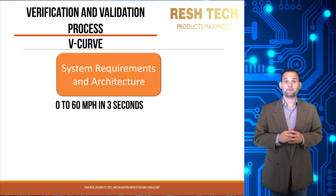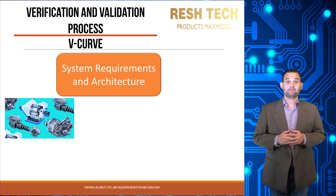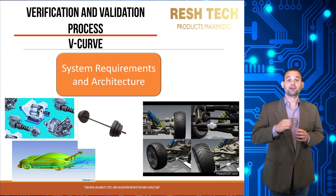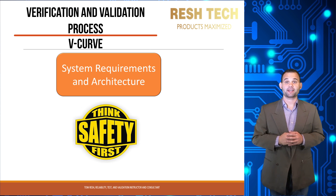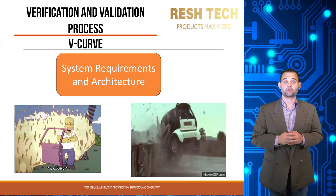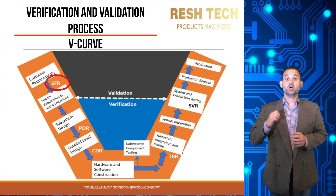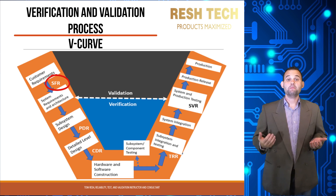Achieving 0-60 in 3 seconds requires integrated technical solutions that need multidisciplinary input, collaboration, and agreement. Everything from the horsepower and torque for the propulsion system to the weight, aerodynamics, chassis, tire, and wheel selection must be considered. Safety considerations such as crash design become more complex as you lighten the vehicle. Once system requirements and architecture are defined, a System Functional Review (SFR) is performed to ensure cross-functional agreement that the system requirements meet the customer's requirements.